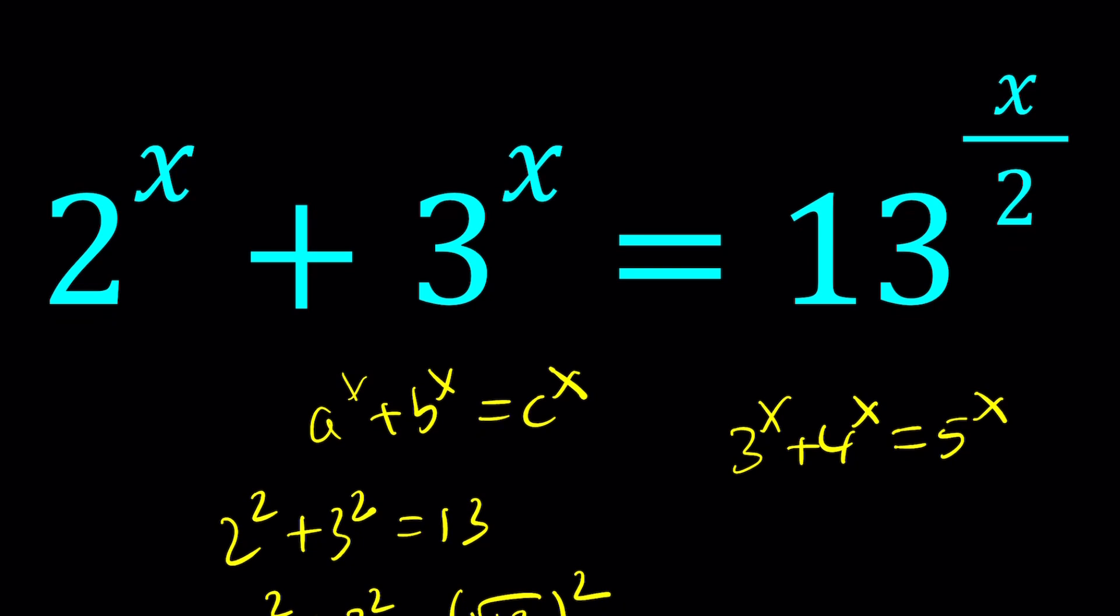With exponential equations, there are two cases. If you have a base bigger than 1, your function will be always increasing. If you have a base between 0 and 1, because you don't want the base to be negative, you're going to have a decreasing function.